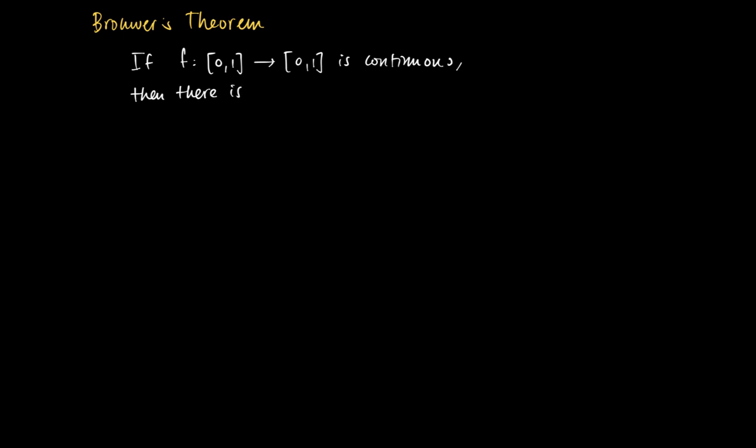What does it say? Well, a fixed point is an x in [0,1] with the property that f equals x. This theorem is also referred to as Brouwer's fixed point theorem.